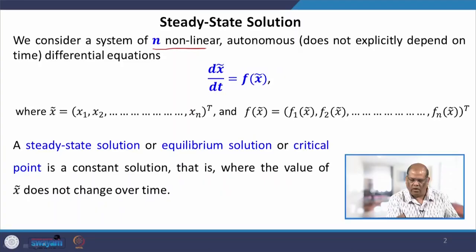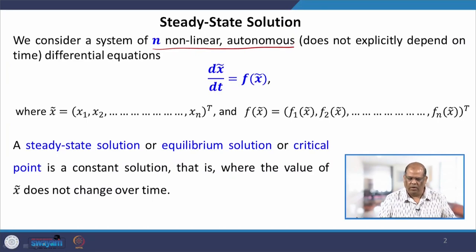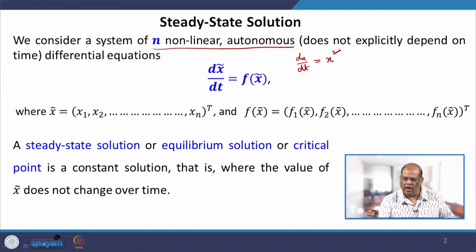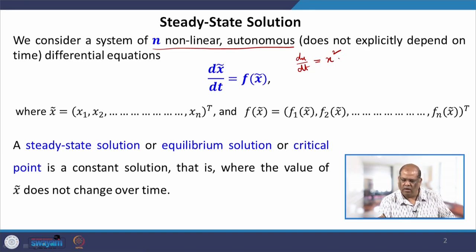What do you mean by an equilibrium solution or a steady state solution? If we consider a system of n nonlinear autonomous differential equations. By autonomous, we mean that your differential equation dx/dt will not contain explicitly the function of time — that means it will be dx/dt equal to some function of x, but no explicit function of time.